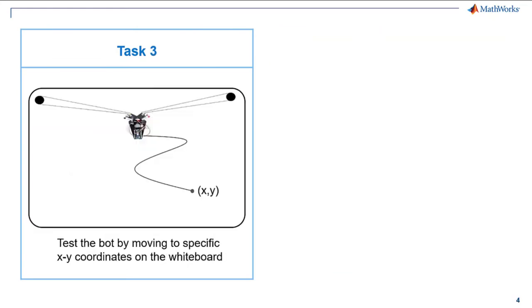Once it is done, in task 3 we will give specific commands to the drawing robot in which we will provide the commands to move to a particular location on the whiteboard. Doing this will ensure the drawing robot is in proper order.